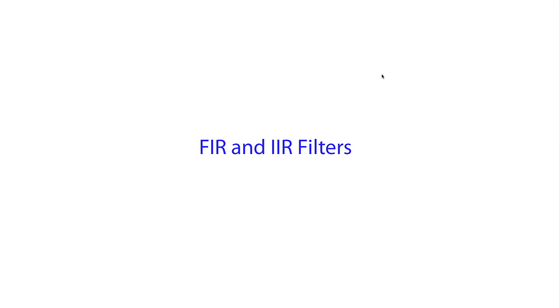There are two different types of filters that are used in digital signal processing. One is called FIR and the other is called IIR. We're going to explore those in this lecture.